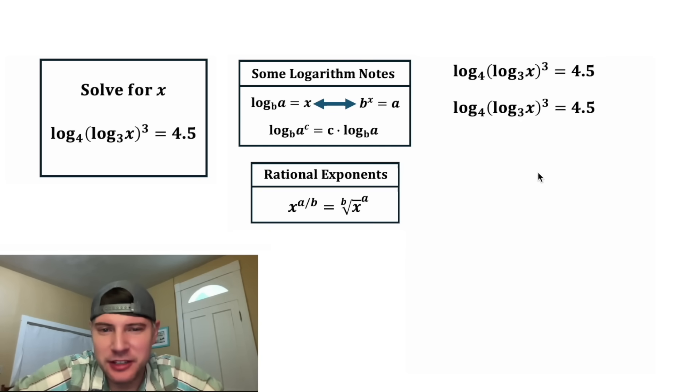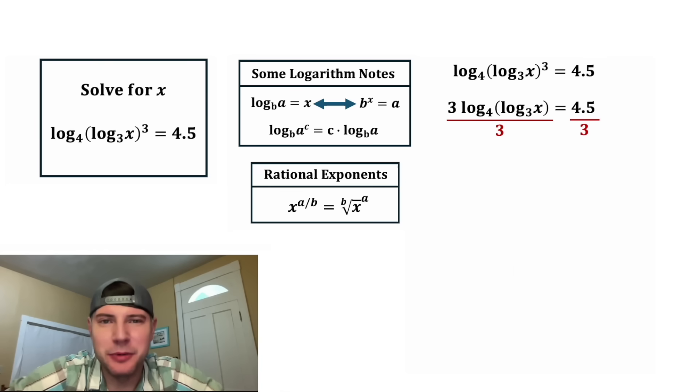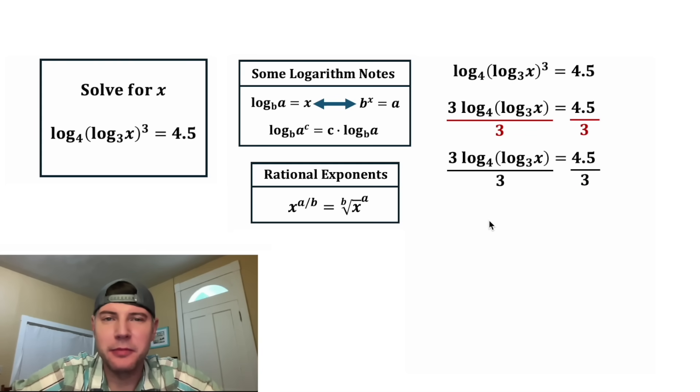First, let's copy it down and let's bring this exponent to the front. Now we have 3 times all of this equals 4.5. We can get rid of this 3 by dividing both sides by 3. On the left-hand side, the 3 on top and on bottom will cancel each other out. And on the right-hand side, this 4.5 over 3, we can simplify this fraction by dividing top and bottom by 1.5. 4.5 divided by 1.5 is 3, and 3 divided by 1.5 is 2. So we have all of this is equal to 3 over 2.